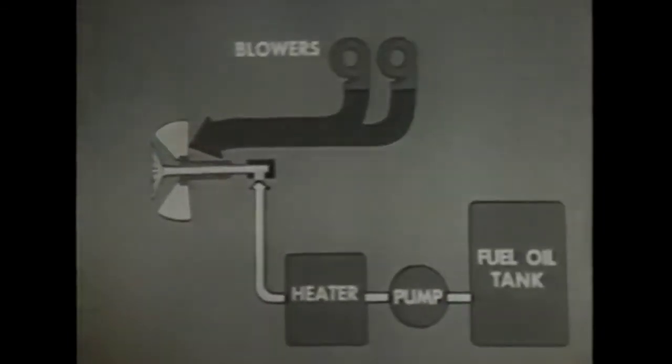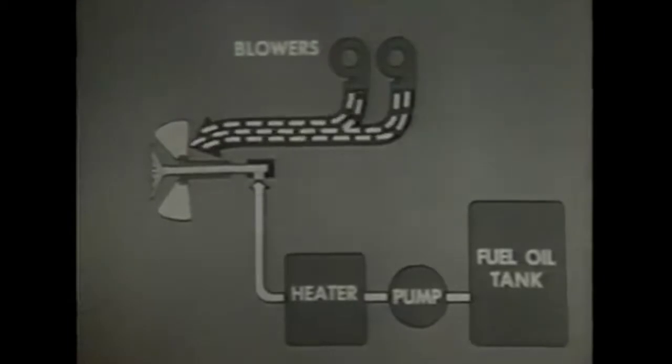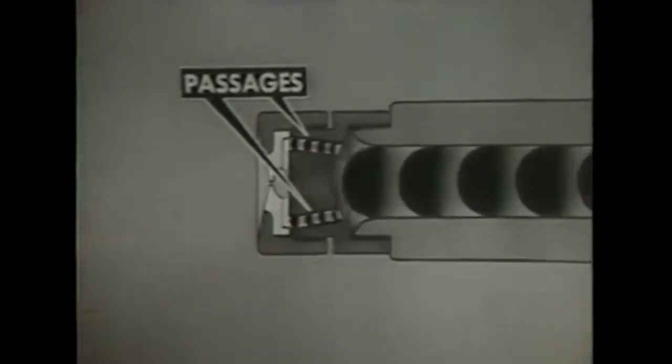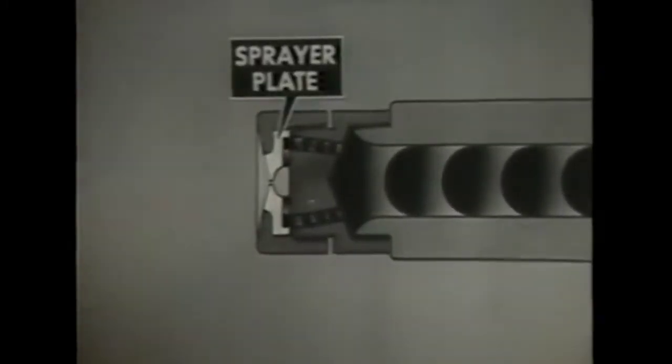The forced draft blowers send a strong blast of air to the burner. The fuel oil pump sends the oil through the heater where the oil is heated to give it good flow quality. Then the oil is pumped to the burner. This simplified cutaway of the burner shows how the fuel oil is forced through the burner barrel to the atomizer nozzle, where a series of passages guide the oil to the sprayer plate. The sprayer plate makes the oil rotate at high speed, breaking up the oil into particles. The oil leaves the atomizer as a hollow, mist-like cone or spray.